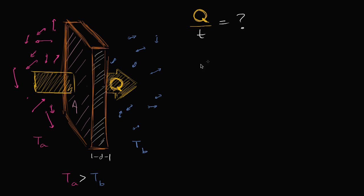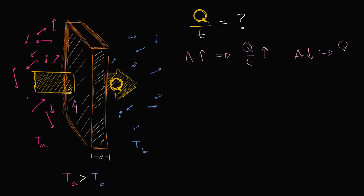How would the rate of heat transfer change depending on how we change these different variables? For example, if our contact area were to go up, then Q over t would also increase, because I have more area for these hot molecules to bump into. They'll heat that wall, and then there'll be more heated wall to heat up the colder air particles. So the rate of heat transfer would go up. And obviously if I made my contact area smaller, then my rate of heat transfer would go down. That feels like common sense.